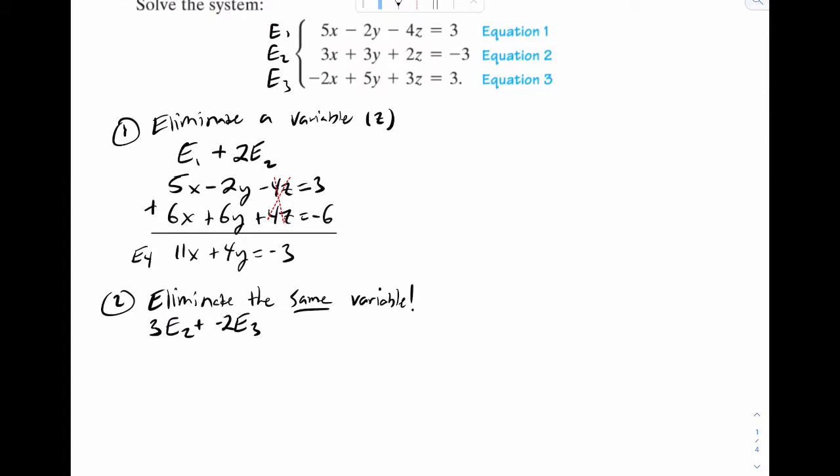So 3E2 is going to be 9x plus 9y plus 6z equals negative 9. And negative 2E3, that's 4x minus 10y minus 6z. That equals negative 6. Now we add it. And again, notice that the z's cancel, which is what we wanted. Now we have 13x minus y equals negative 15. We'll call that E5.